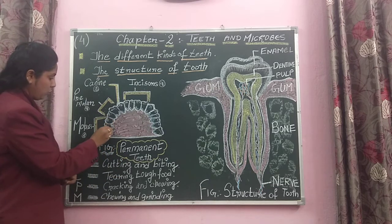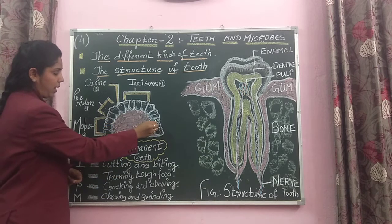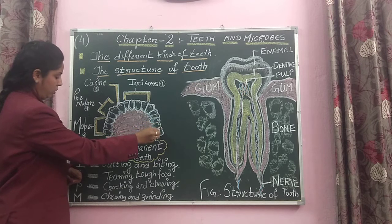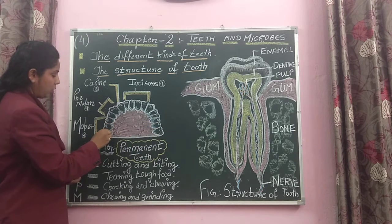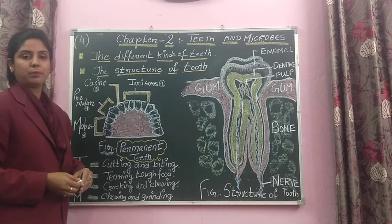Counting the molars: 1, 2, 3 on each side, giving a total of 6 molars in the upper jaw.